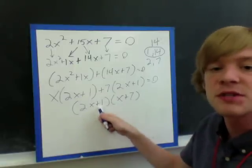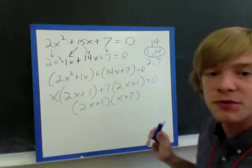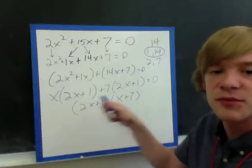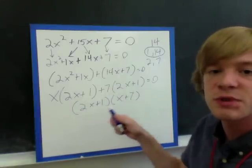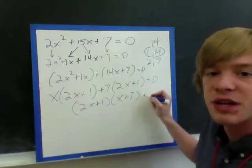So we should remember the first parentheses is what was the same in both, and the second parentheses is what's in front. So we've got 2x plus 1, we've got x plus 7, but we still have our equal 0.